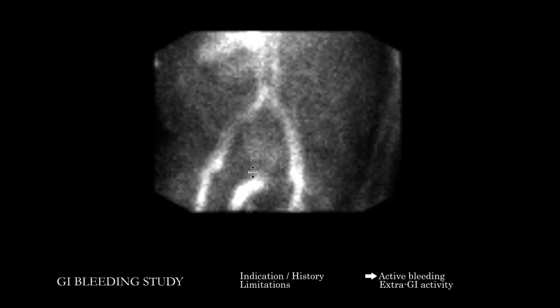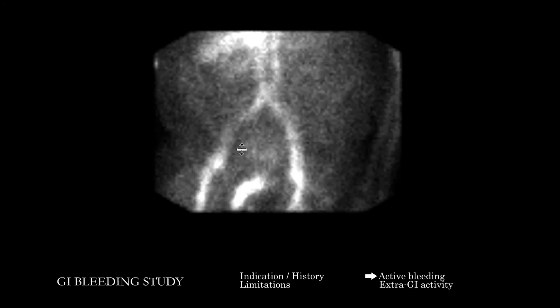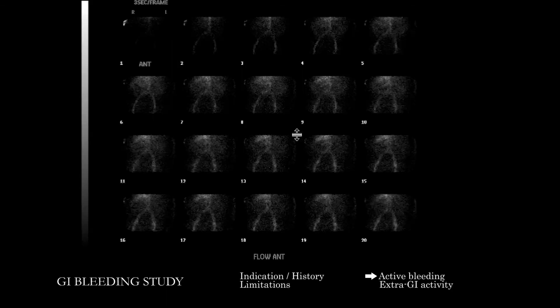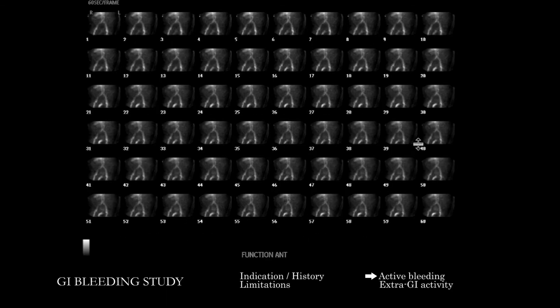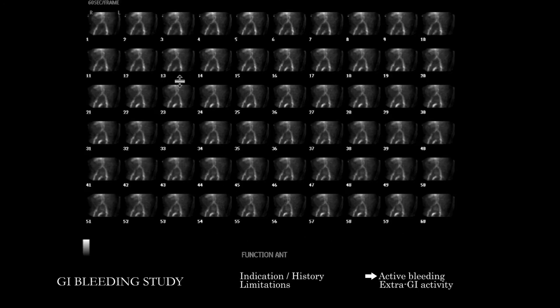When we correlate with anatomic imaging, we can correspond this to urinary tract activity, genitourinary activity, and a normal penile blush on this male patient. As we go further, we can get these summative images which show the activity over the whole time course of the study, both in the flow and blood pool phase, and then where we would expect abnormal GI activity.